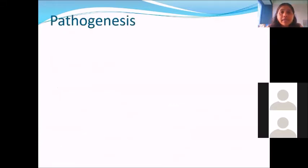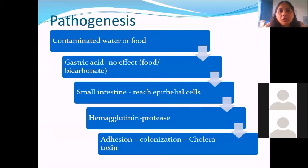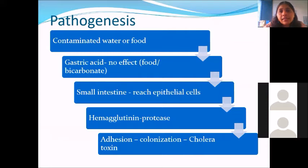Let's understand the pathogenesis of Vibrio cholerae. What is the route of infection? What happens exactly when Vibrio enters through contaminated food and water? If the food has bicarbonate ions and the pH is slightly alkaline, it causes neutralization of the gastric pH. Vibrio is an organism that requires alkaline pH — if there is a lot of acidity, the organism dies quickly. If food accompanies the infected water, chances of survival of Vibrio are much higher, because food neutralizes the acidity and lets Vibrio cholerae pass to the jejunum.